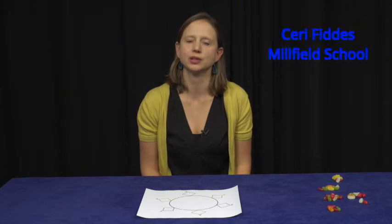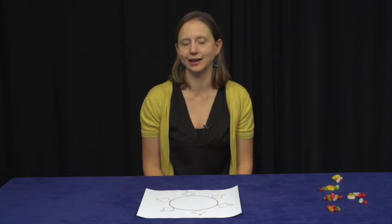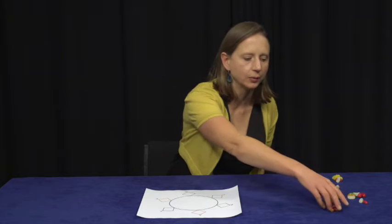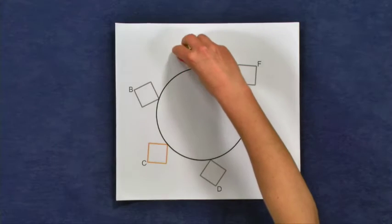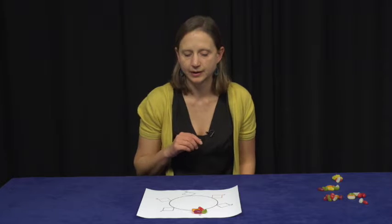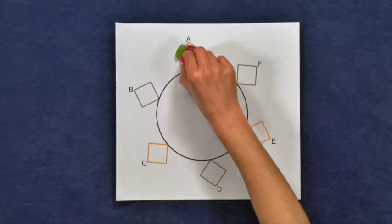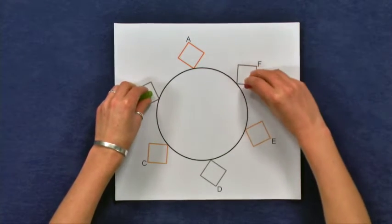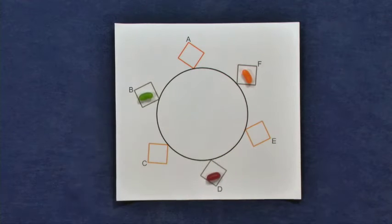I'm going to call these children A, B, C, D, E and F so that we can talk about them easily. And it'll be child A who starts with the sweets. Clearly, they need to start with at least four, otherwise we can't do anything. Now if A performs a move, that means they eat one and the other three get shared out like this. And if A just started with four, then we're now stuck, we can't do anything else.